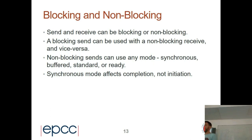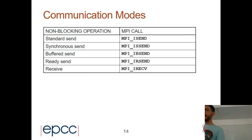Summary of the non-blocking variants: MPI_ISend is the standard send where the library picks what's appropriate; MPI_ISsend is the synchronous non-blocking send; MPI_IBsend is a non-blocking buffered send, which is rarely seen in practice; MPI_IRsend is the non-blocking ready send; and MPI_IRecv is the non-blocking receive.